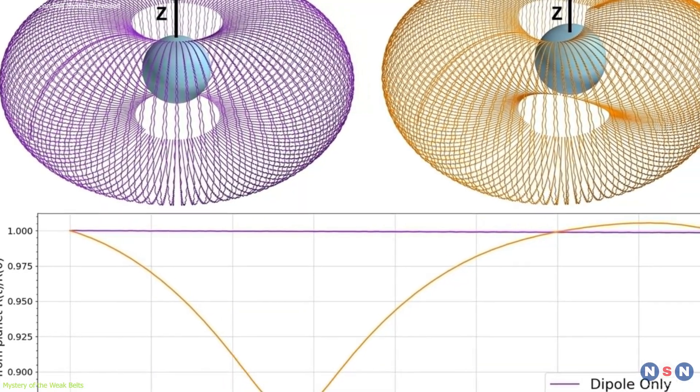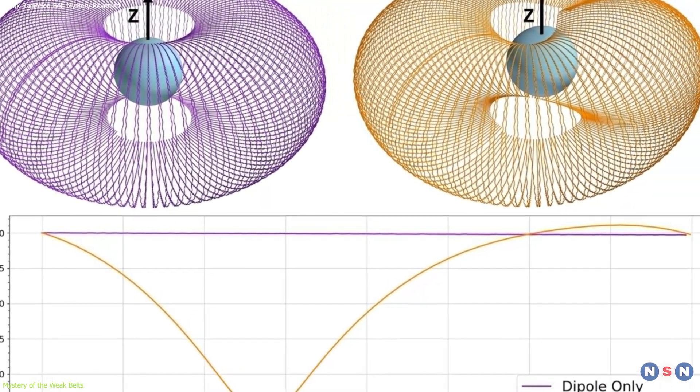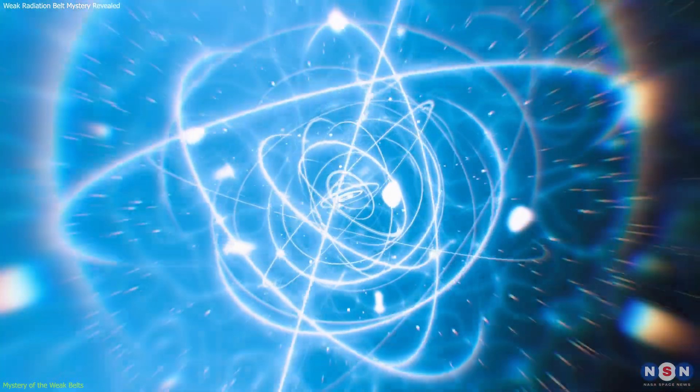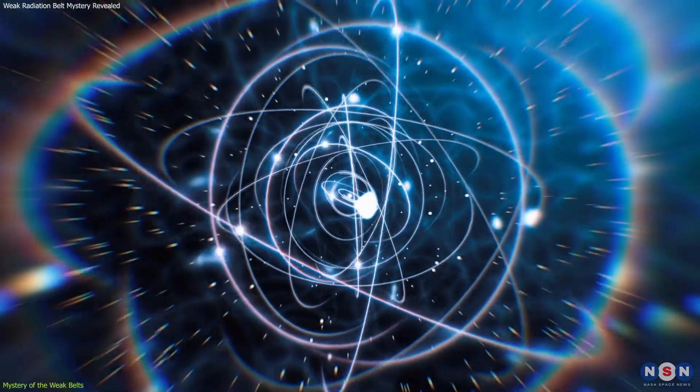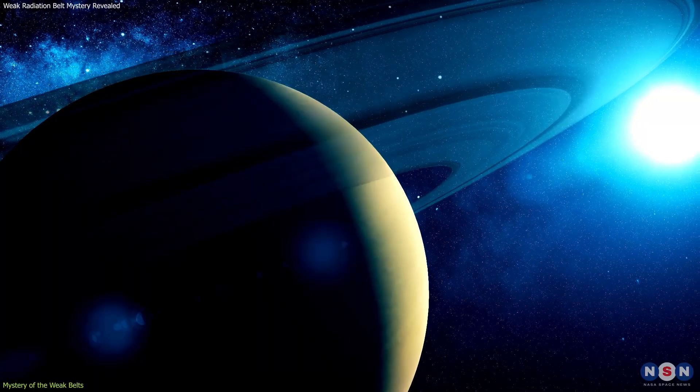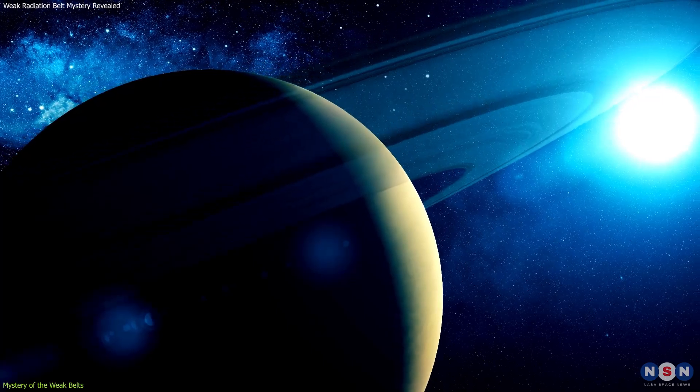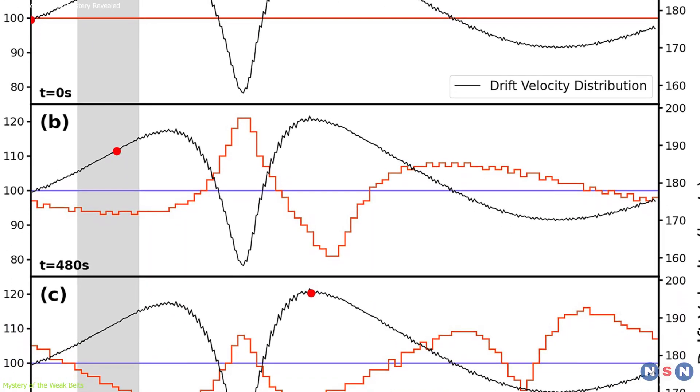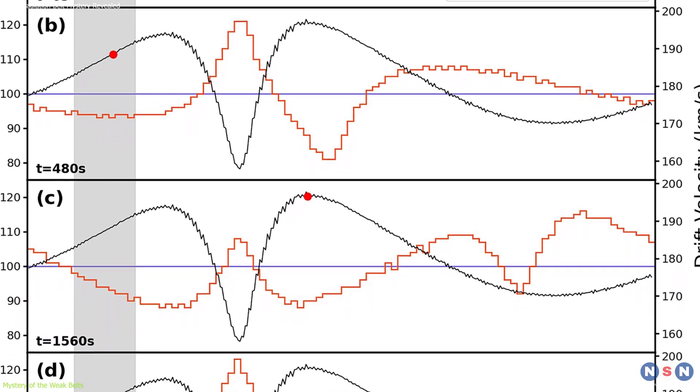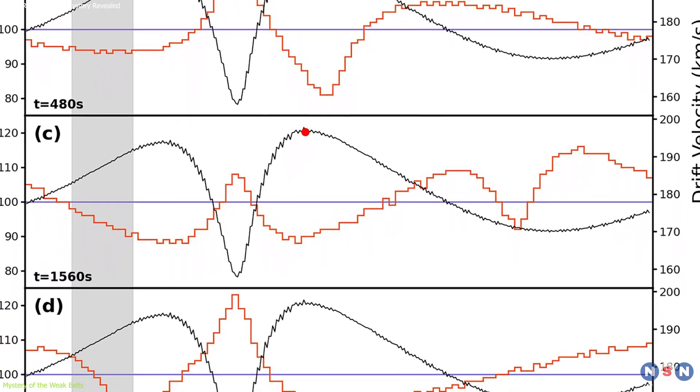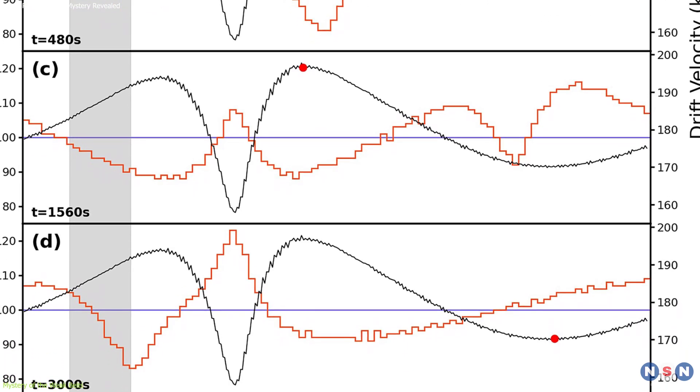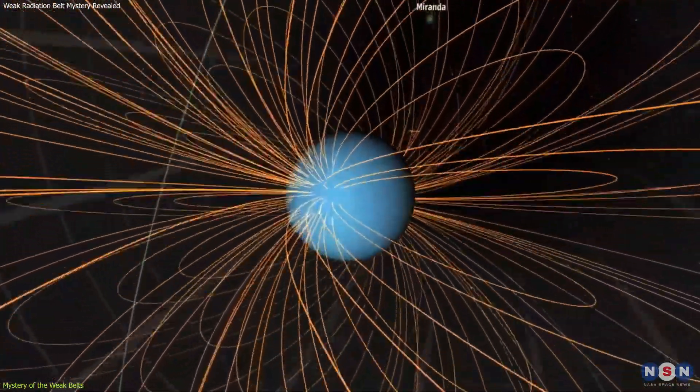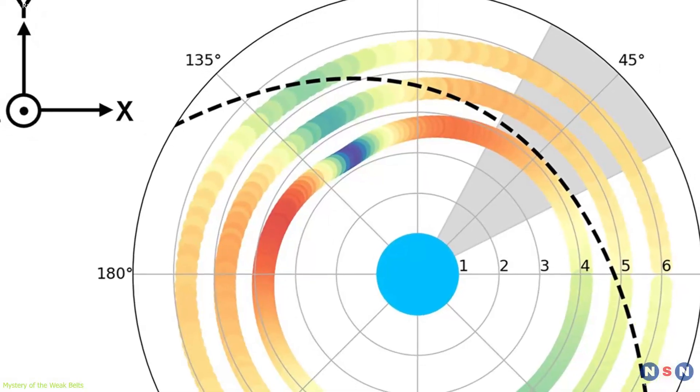The insights gained from these simulations are truly illuminating. By utilizing the Boris algorithm, a tool commonly employed in plasma physics to simulate the motion of particles in magnetic fields, researchers have accurately mapped the trajectories of charged particles orbiting Uranus. These trajectories are not uniform or predictable. Instead, as particles encounter regions of varying magnetic strength, they accelerate and decelerate. This variability directly stems from the planet's unusual quadrupole magnetic component, and is known as magnetic shearing.